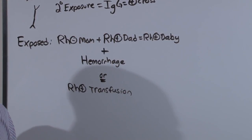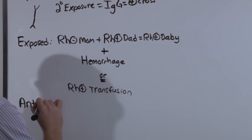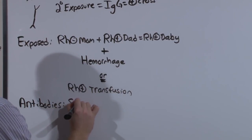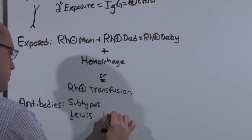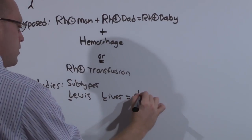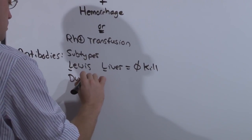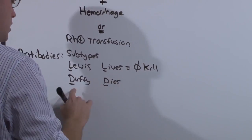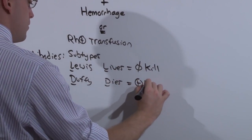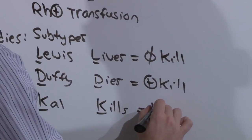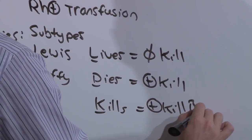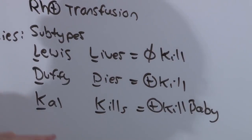But just having antibodies isn't enough. And this is something you're not going to get tested on a lot, but it is true. So if you want to go for that 290, take this information away from you. The antibodies are of different subtypes. The antibodies, Lewis antibodies lives, that is they do not kill baby. Duffy dies. Duffy subtype antibodies do kill baby. And Kell subtype kills, which means does kill baby.